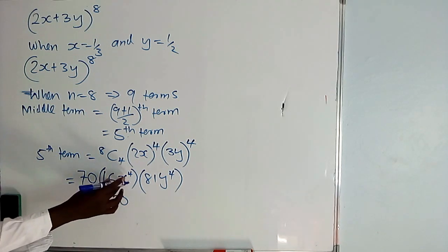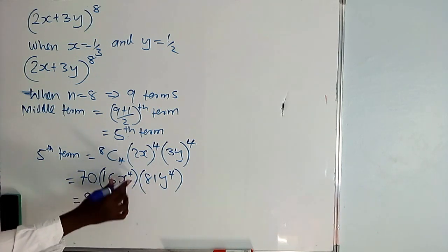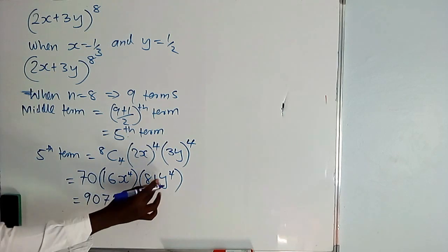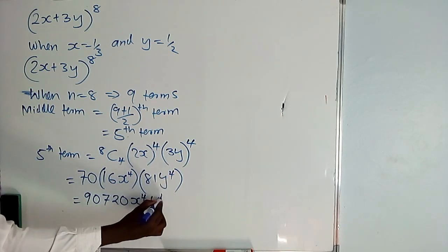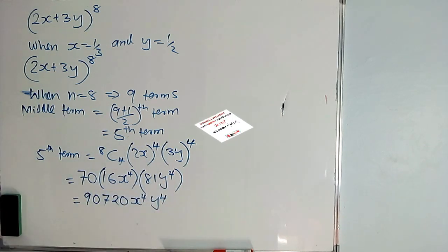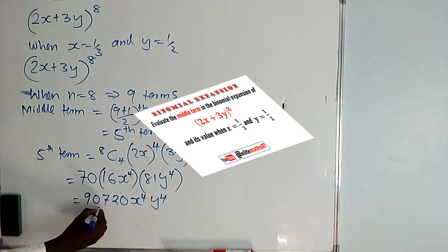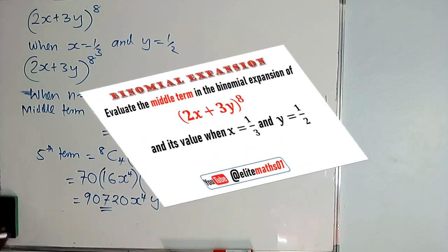So you found 9720, then it is times x raised to power 4, then it is times y raised to power 4. So the fifth term is 9720 x raised to power 4.